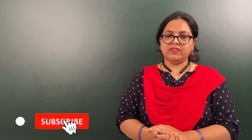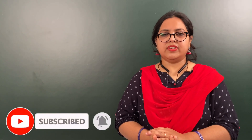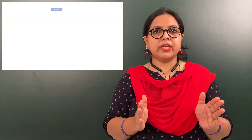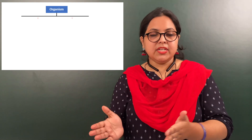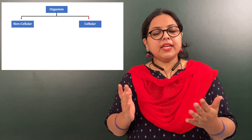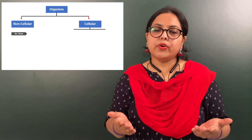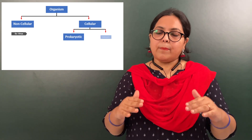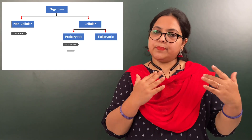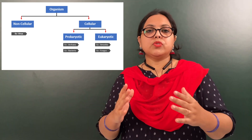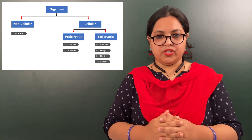Before going into detail, we will have a little introduction to this topic. All organisms can be categorized on the basis of presence and absence of a cell. We can divide organisms into two categories: those in which a cell is absent — we call them non-cellular organisms, an example being viruses — and those in which a cell is present, called cellular organisms. Cellular organisms are further divided into two categories: prokaryotic and eukaryotic.